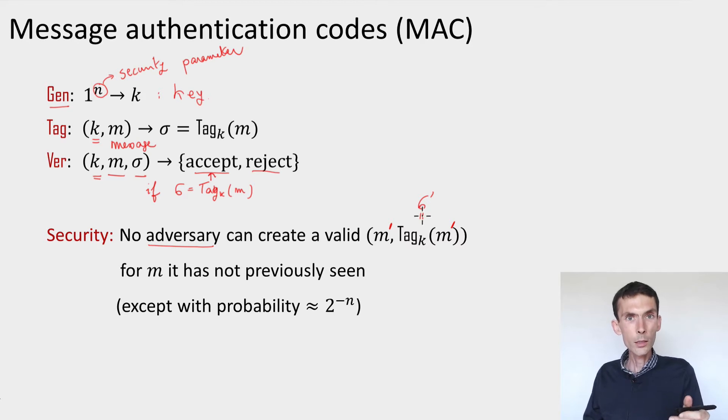So if we have such a thing, you see how you can use it in order to authenticate a public channel. What Alice will do simply is that instead of sending directly her basis information, her output information, she'll send the same information, but tags for that information. And when Bob receives it, he'll verify that the tags are correct. Now, of course, in order for Alice and Bob to implement the tagging and the verification scheme, they need to share the key K. They need to share the same secret key, which is exactly what they're trying to achieve when they're doing quantum key distribution.